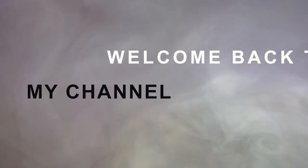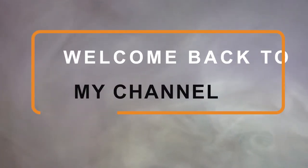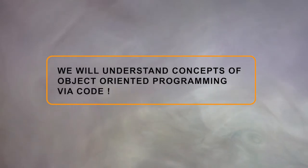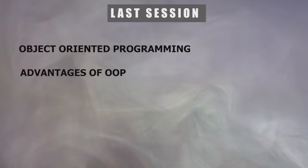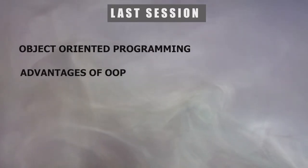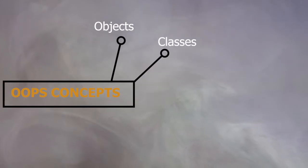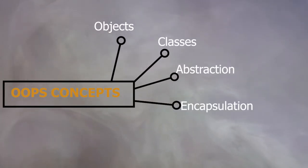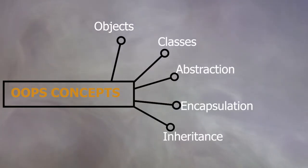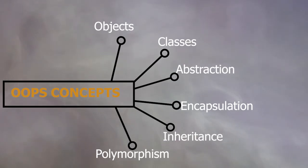Hey everyone, welcome back to my channel. From now we're going to understand the concepts of object-oriented programming through code. In the last lecture we covered OOP advantages and the six concepts: objects, classes, abstraction, encapsulation, inheritance, and polymorphism.